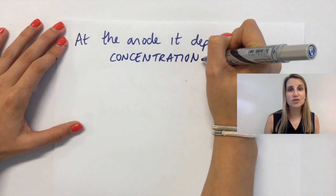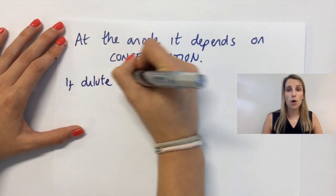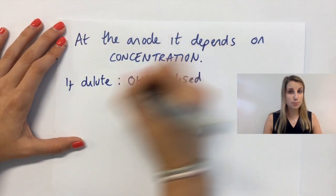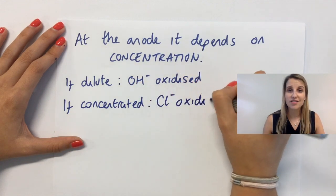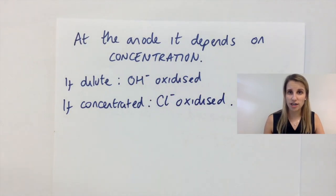So if you've got a dilute aqueous solution, then the OH- will get oxidized preferentially. Whereas if you've got a concentrated solution, then the Cl- will get oxidized preferentially.